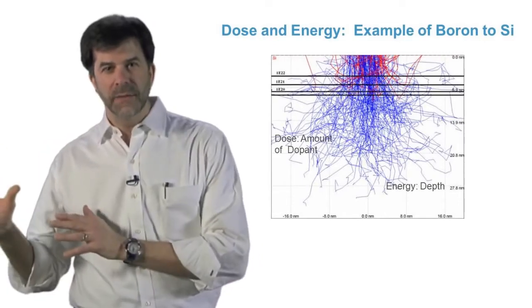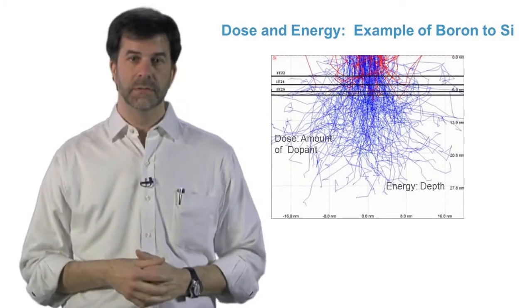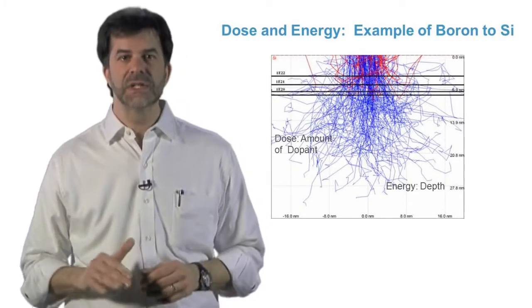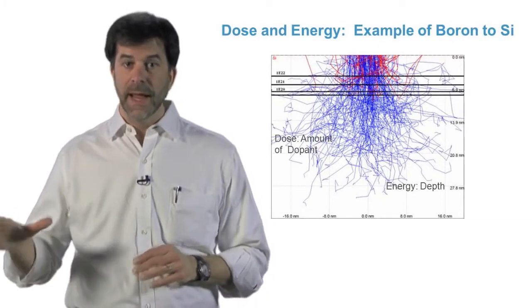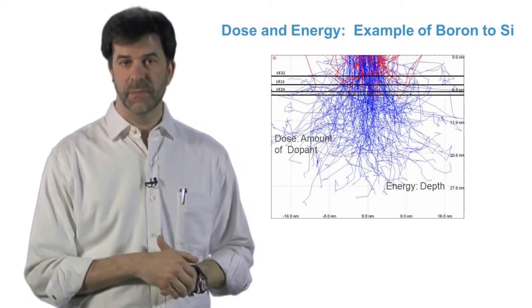In front end of the line processes where you find ion implant, you're adding layers below the surface of the silicon. The photolithographic process acts as a stencil on the surface of the wafer and can be either photoresist or a patterned hard mask, silicon dioxide for example.